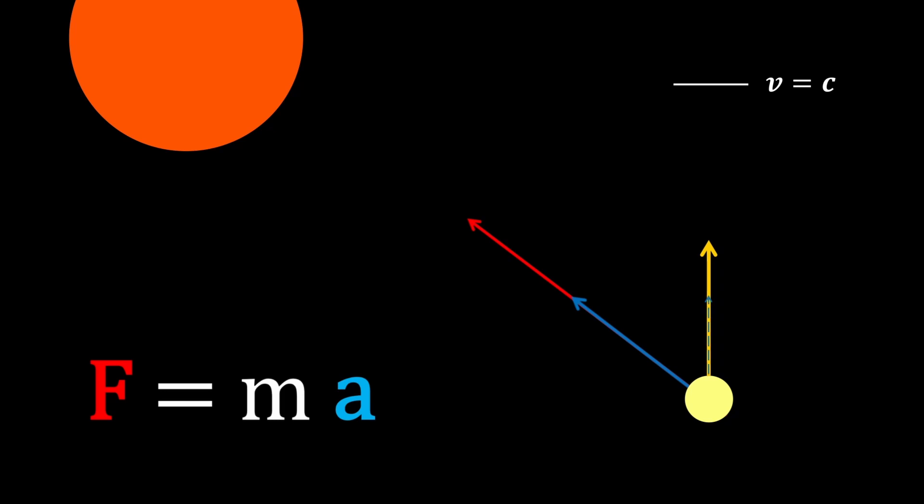Notice that the acceleration vector's tangential component will increase the speed of light in yellow beyond its observed limit. F equals MA does not correctly predict the movement of light.